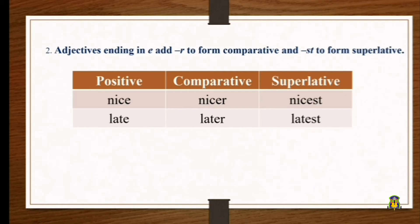The next instance: if an adjective ends in -e, we just add -r to form the comparative and -st to form the superlative. For example, 'nice' — N-I-C-E — ends with e, so the comparative is 'nicer' and the superlative is 'nicest.' Similarly, 'late' becomes 'later' and 'latest.'